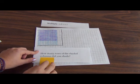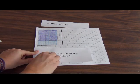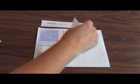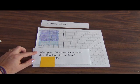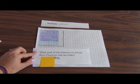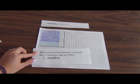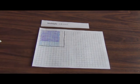Now we can ask ourselves: how many rows of the shaded columns did we shade? 1, 2, 3, 4, 5, 6, 7 - seven rows. Fantastic. So what part of the distance to school did Charlene ride her bike? 7/10 of the part, 7/10.